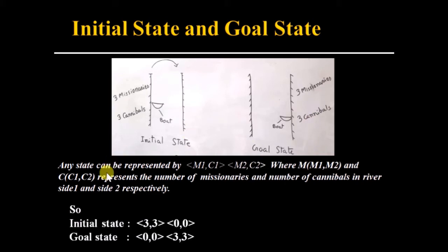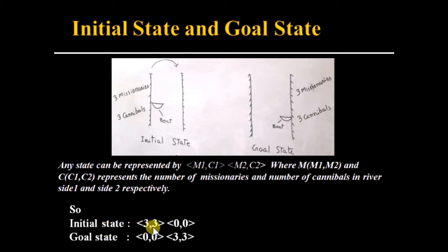Any state can be represented as M1C1 and M2C2, where M1C1 denotes the number of missionaries and cannibals on river side one, and M2C2 denotes the number of missionaries and cannibals on river side two. So the initial state is represented as 3300 — three missionaries, three cannibals on river side one, and zero missionaries, zero cannibals on river side two.